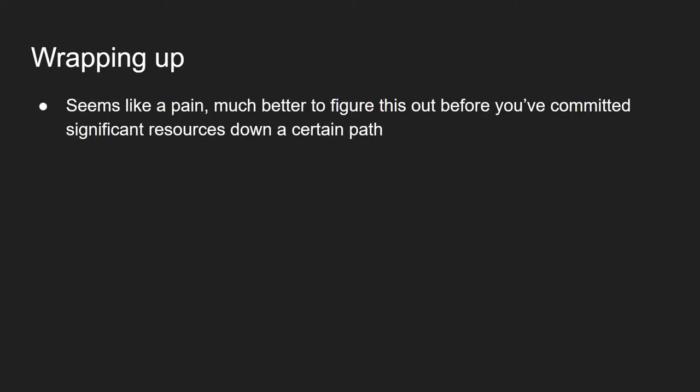Let's wrap this up. I know this seems like a pain, but it's much better to find out early rather than six months down the line when you're already committed to something. Of course, for prototyping or game jams, just get it running quickly and don't worry about all this. Also, this doesn't all need to be decided up front — if you can defer some decisions until you have more information, that's a good thing. But once it's time to start committing significant resources down a certain path, it's probably worth making sure that that's the right path for you. Thanks for watching — if you have any thoughts or questions, leave a comment below.